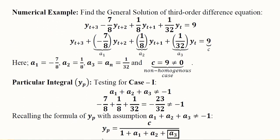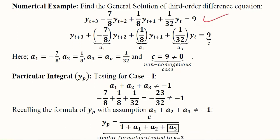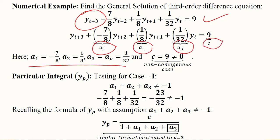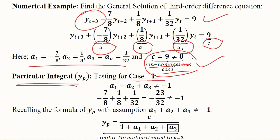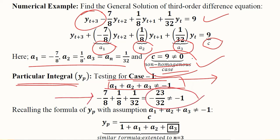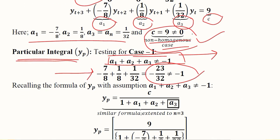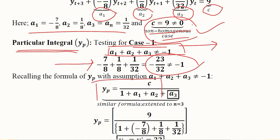Now we solve a numerical example with a third-order difference equation, which is a higher-order difference equation. We extract the values of a1, a2, a3, and c. Since c is not equal to 0, this is a non-homogeneous case. For the particular integral yp, we consider sub-case 1, where the sum of coefficients is not equal to minus 1. The sum is minus 23 over 32, which is not equal to minus 1.